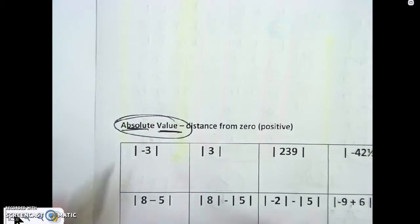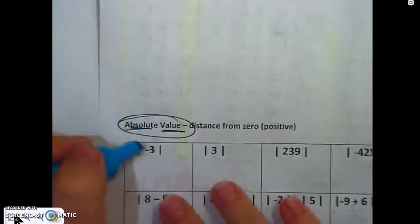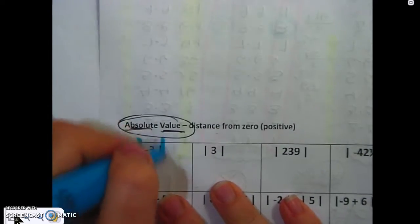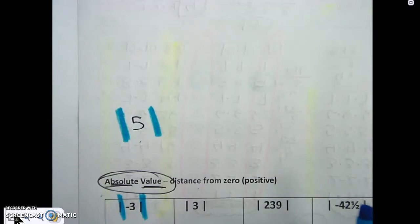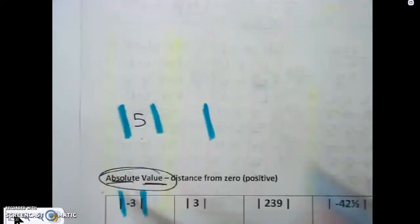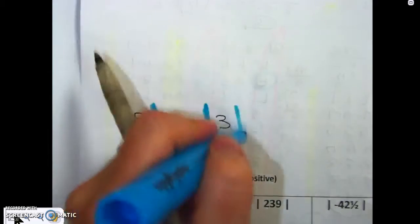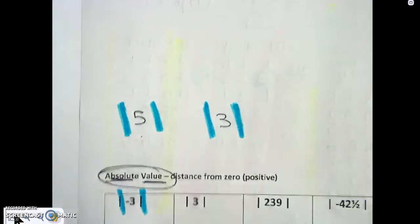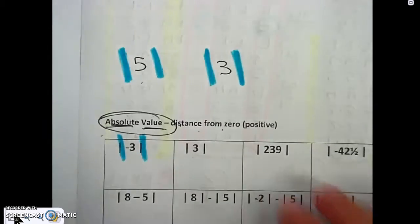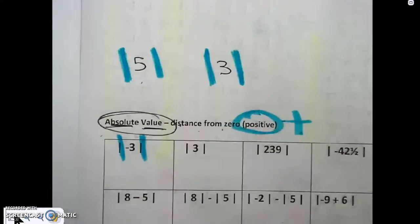You'll know it's absolute value because you see these two lines like this. So this means absolute value — the absolute value of five, the absolute value of three. When you see those bars, it's the distance from zero, which means your answer is always going to be positive.